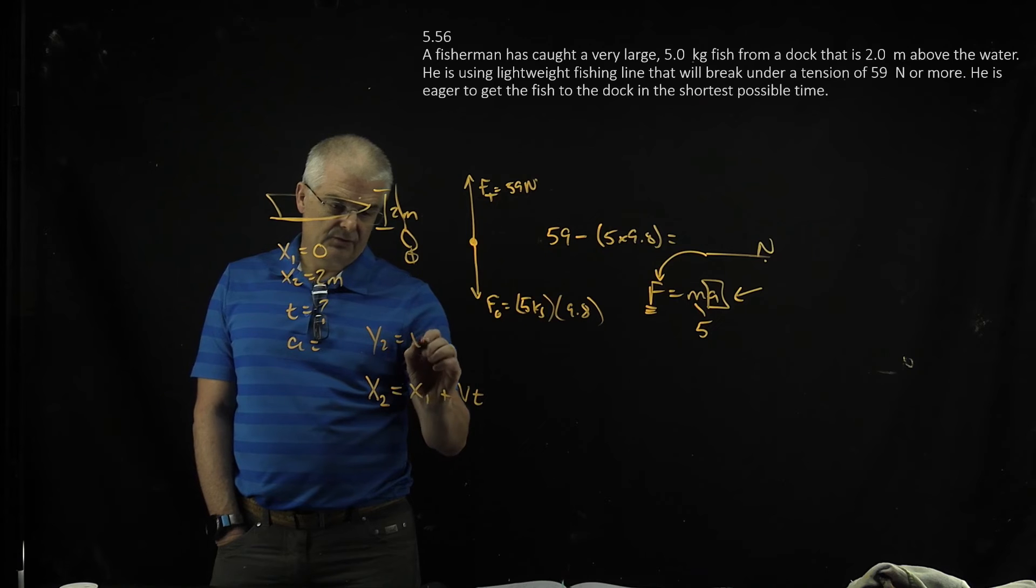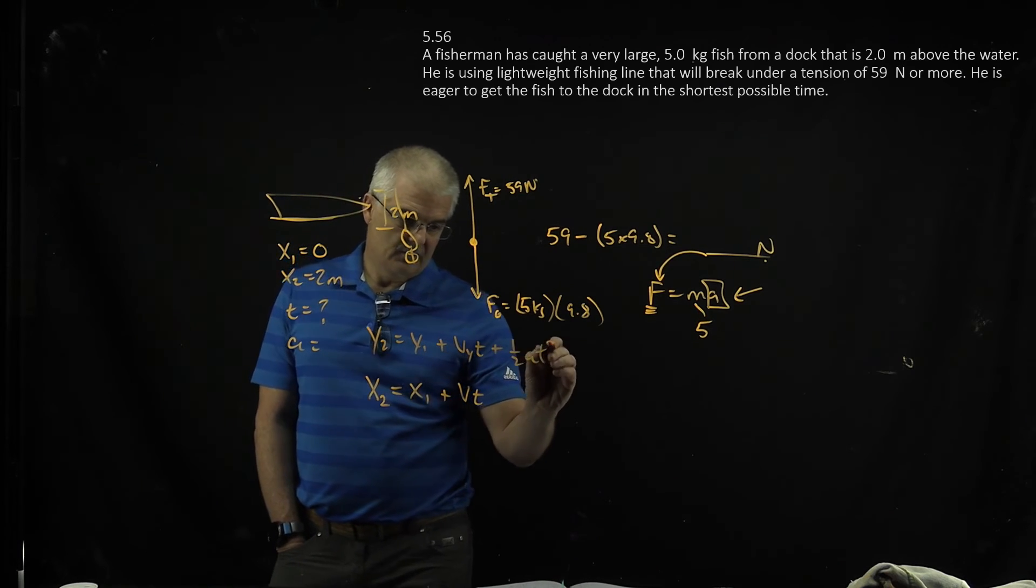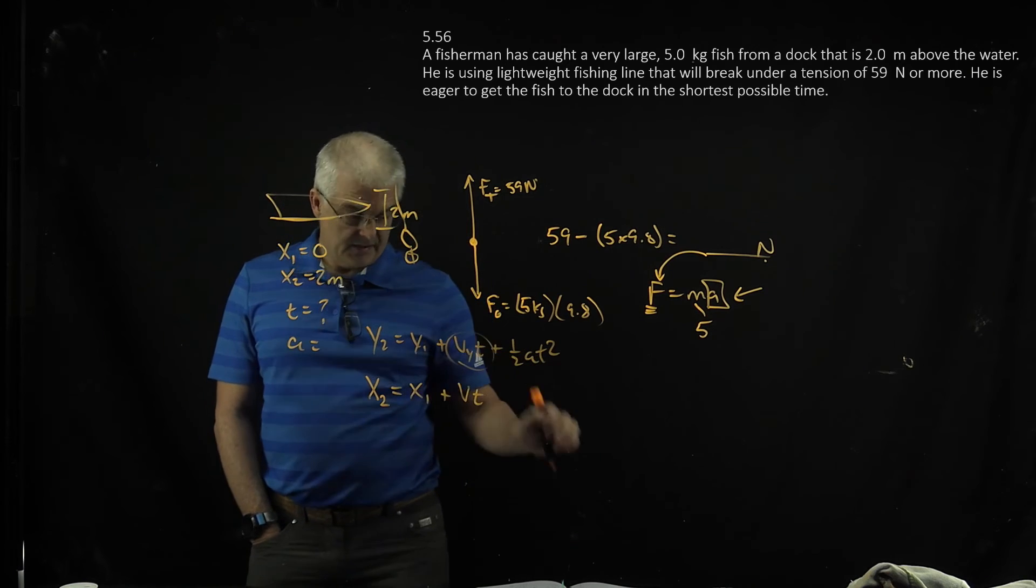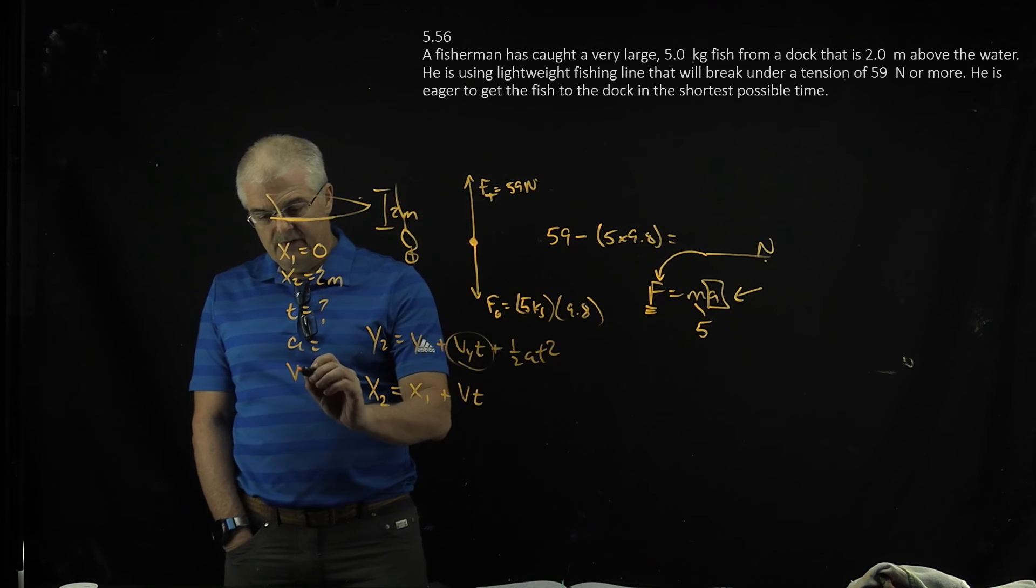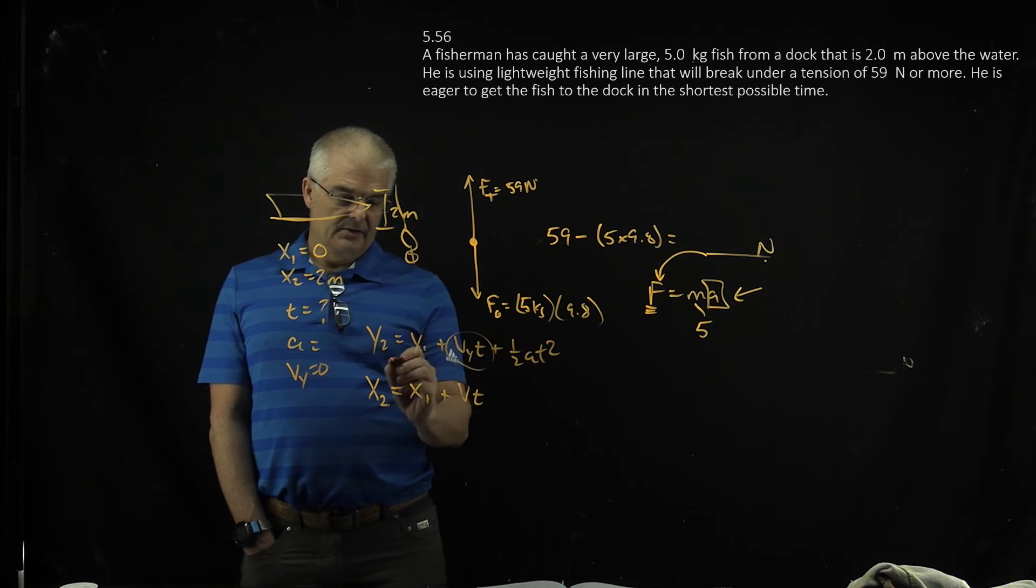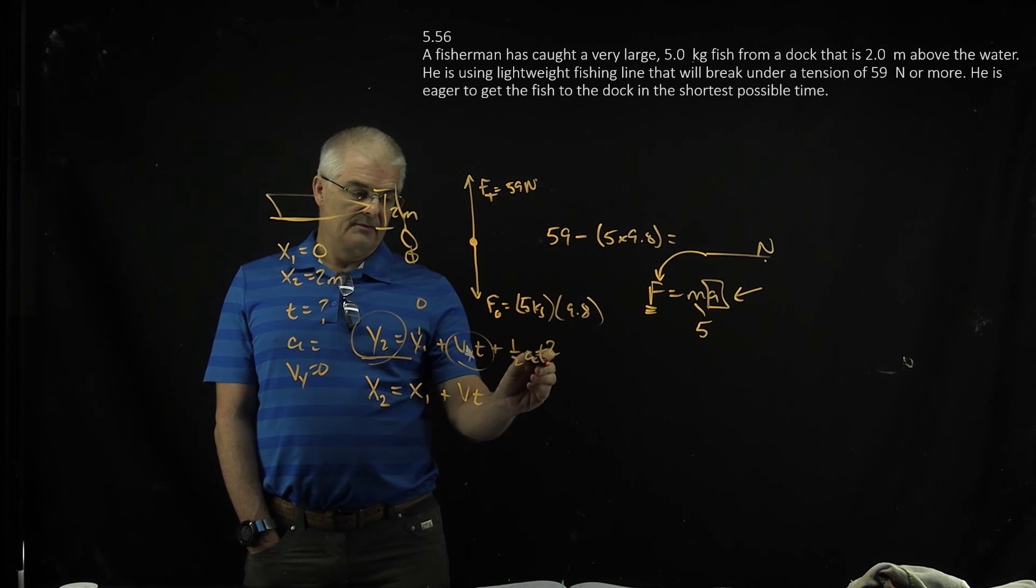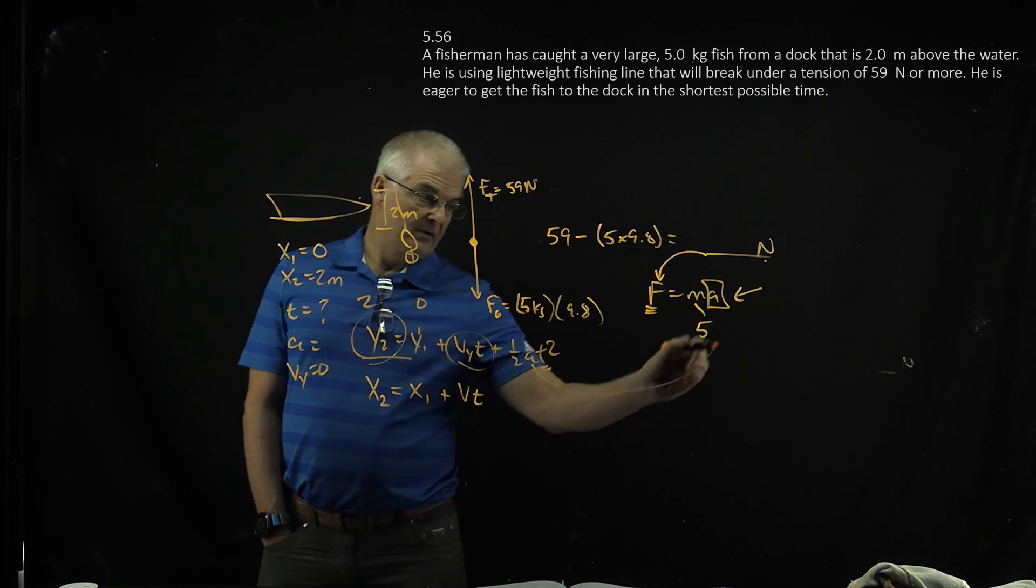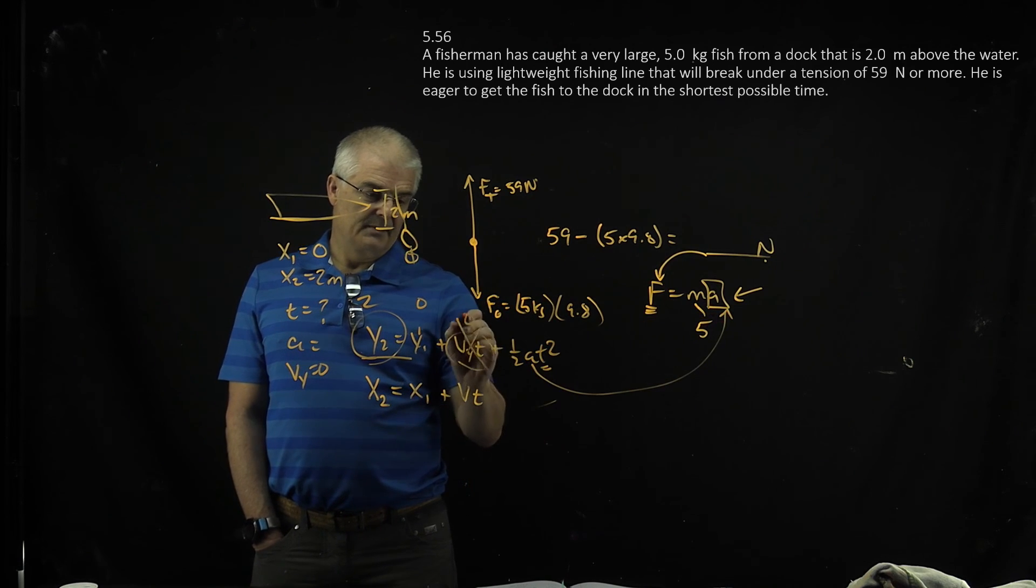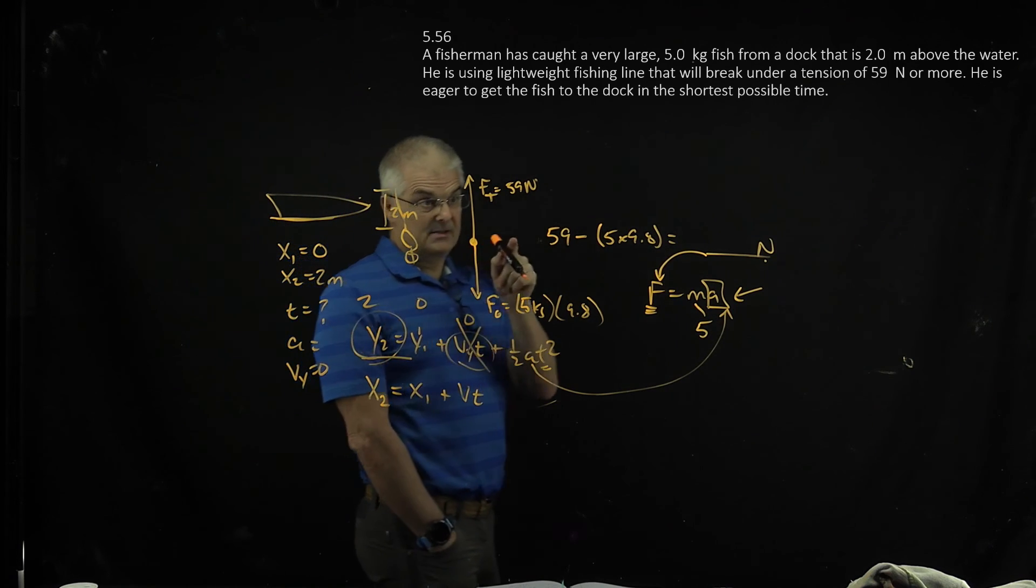We could say Y2 equals Y1 plus VYT plus 1 half AT squared. Now, as a note, it says at some point that the fish at the surface of the water is at rest. So VY equals 0. And so what you're going to do is plug all these in and essentially solve for time. Y1 is 0, Y2 is 2. We know what our A is from here. And this term falls out because it's 0. You're solving for T. There'll be a square root when you're solving the problem. But that's how you get access to this crazy problem.